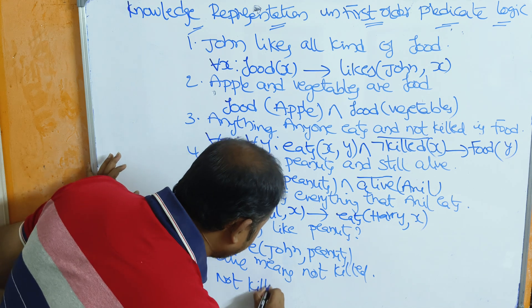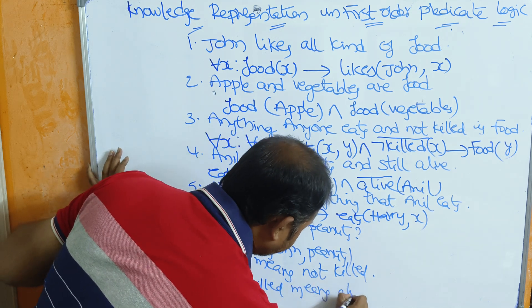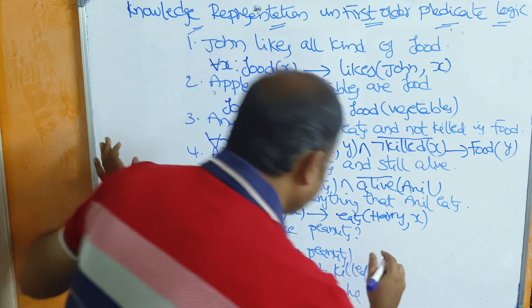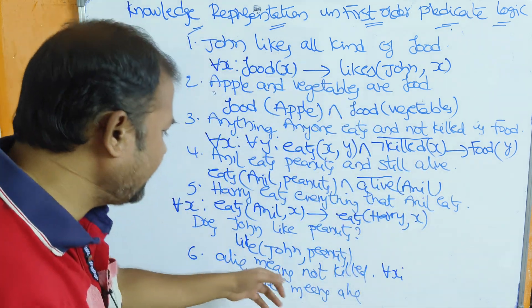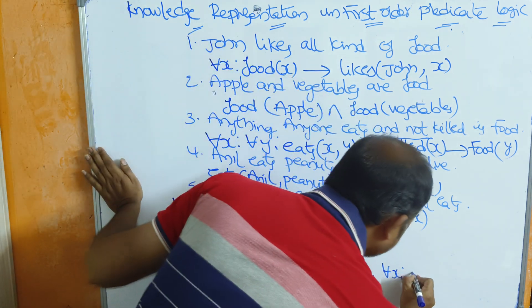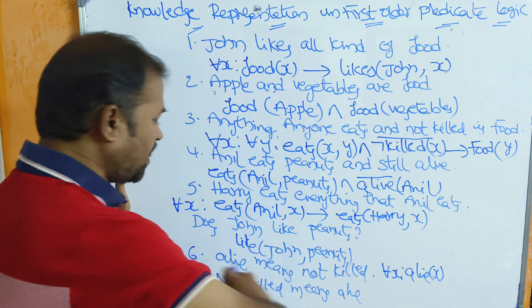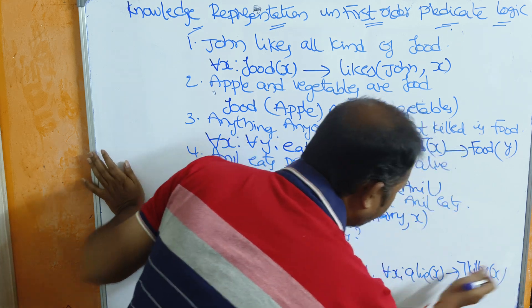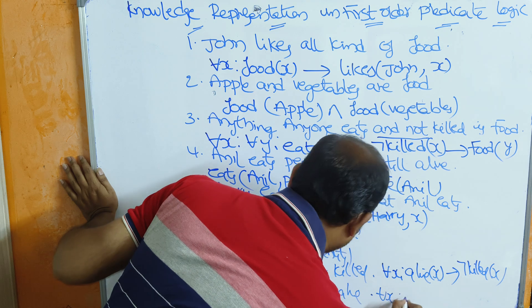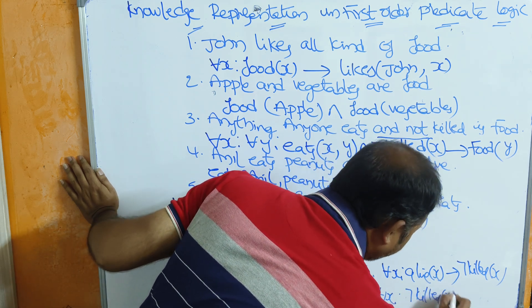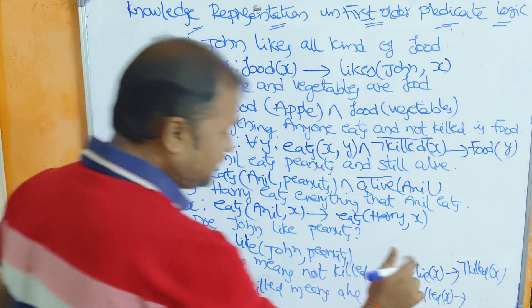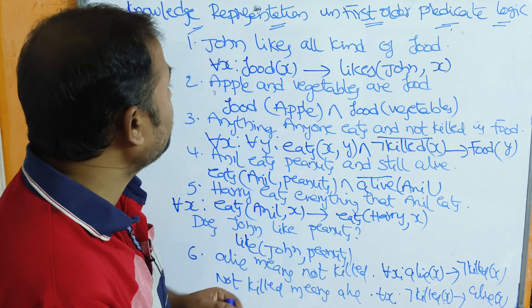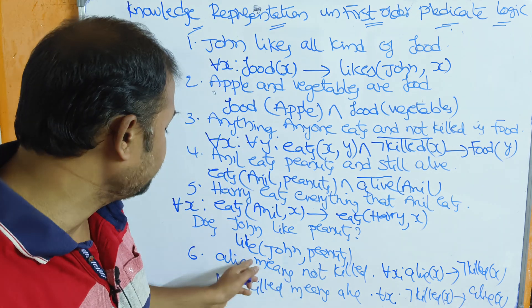Likewise, not killed means alive: ¬killed(x) → alive(x). We represent these as: for all x, alive(x) → not killed(x), and for all x, not killed(x) → alive(x). So if all ten persons are alive, then none are killed, and vice versa. We need to add these two new predicates to solve the problem in the next video using resolution.